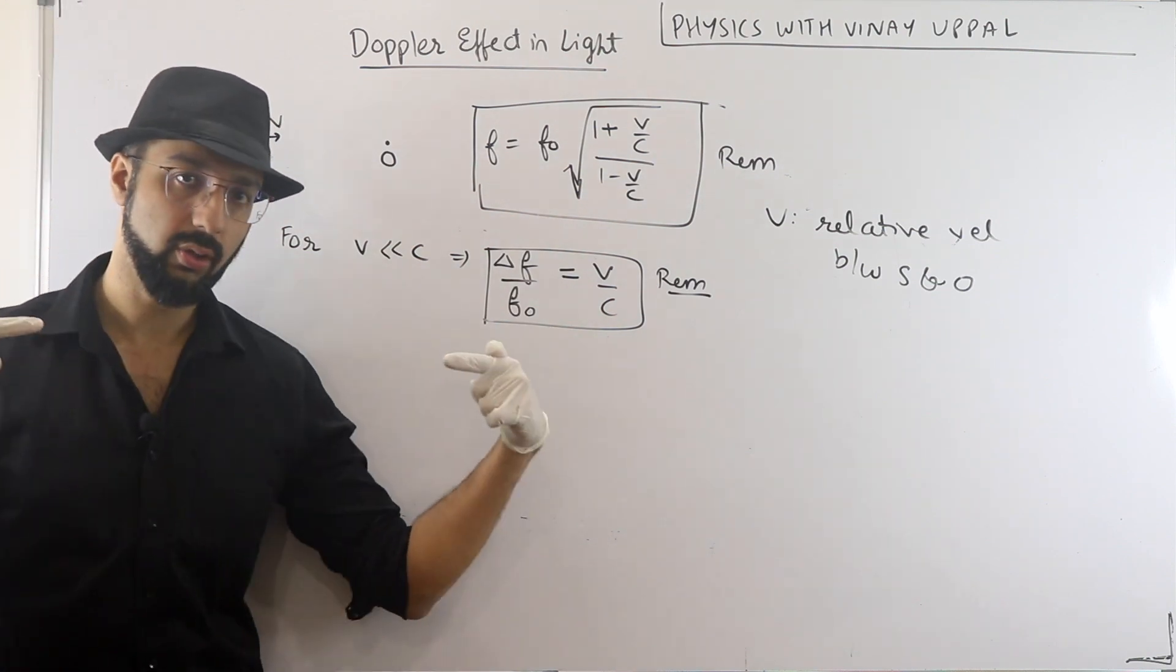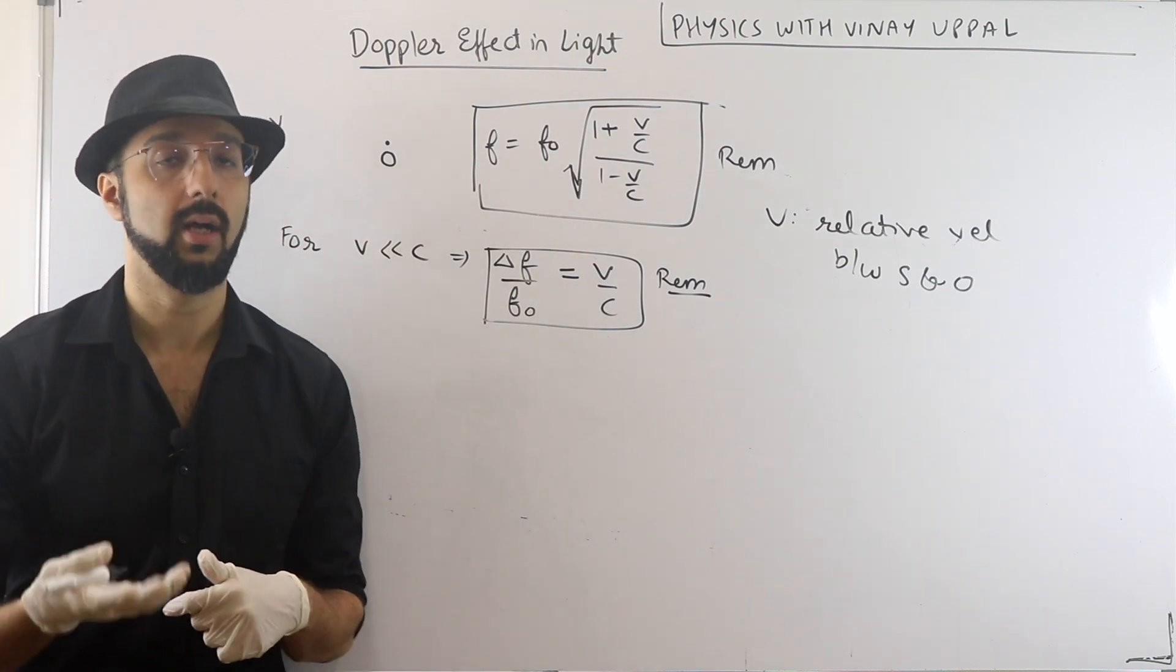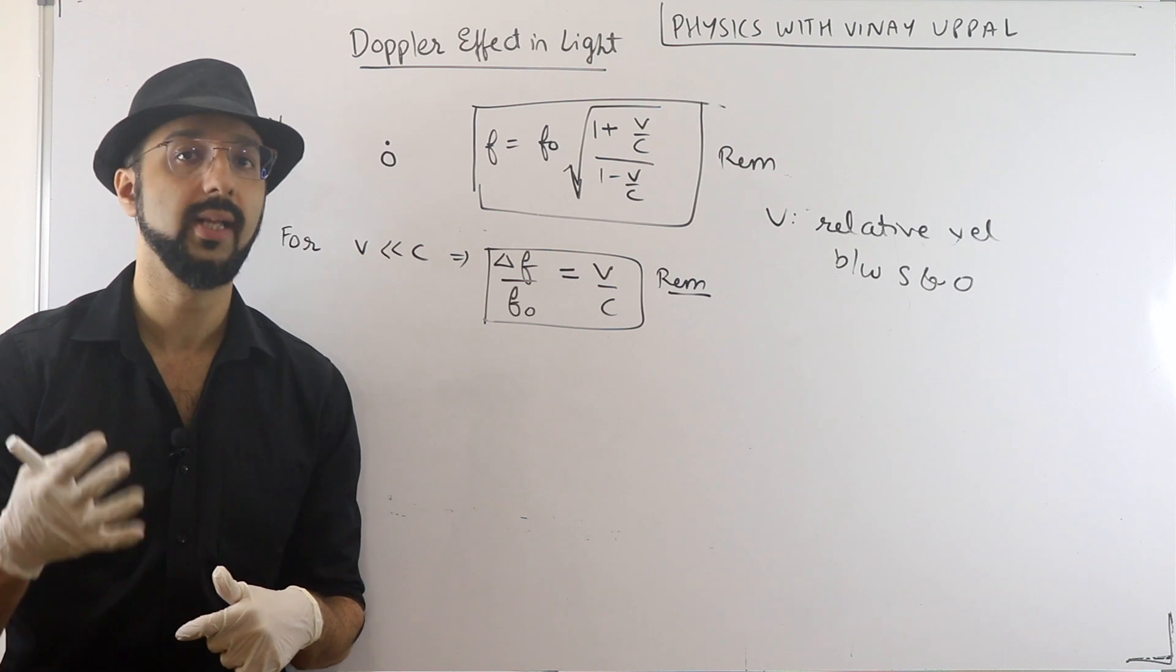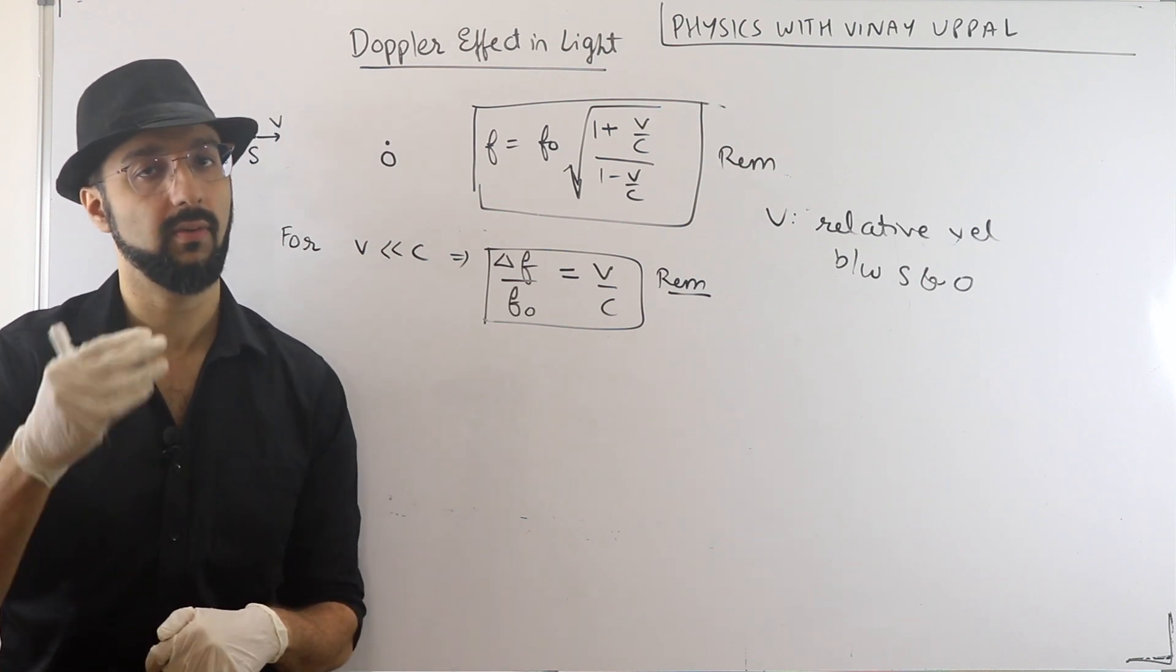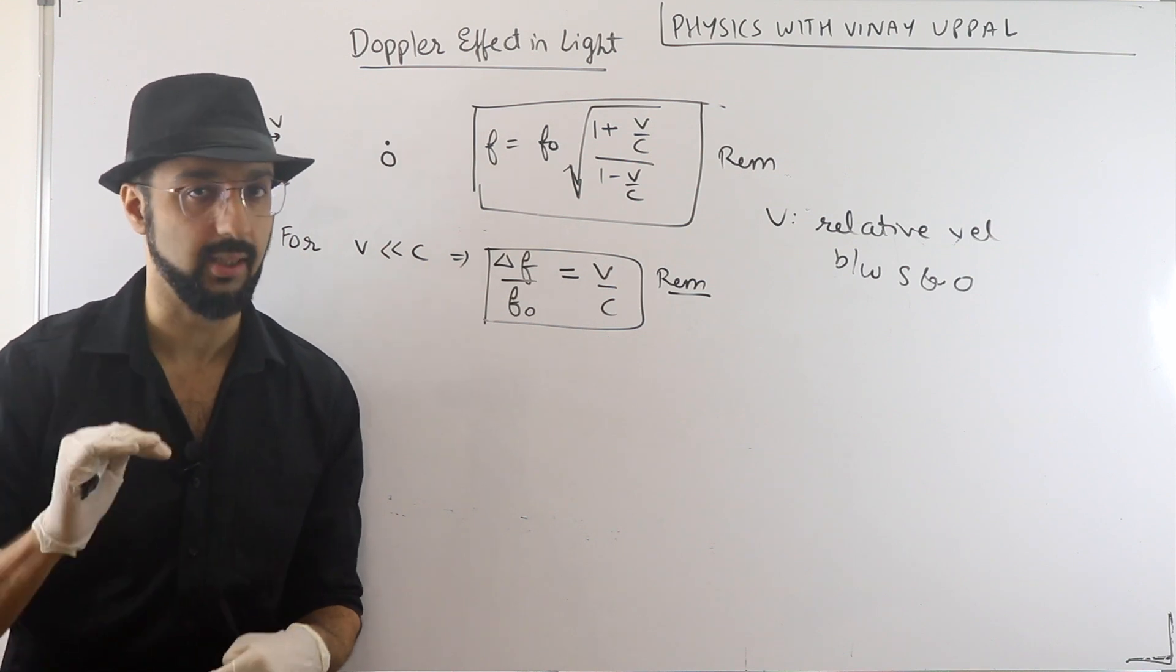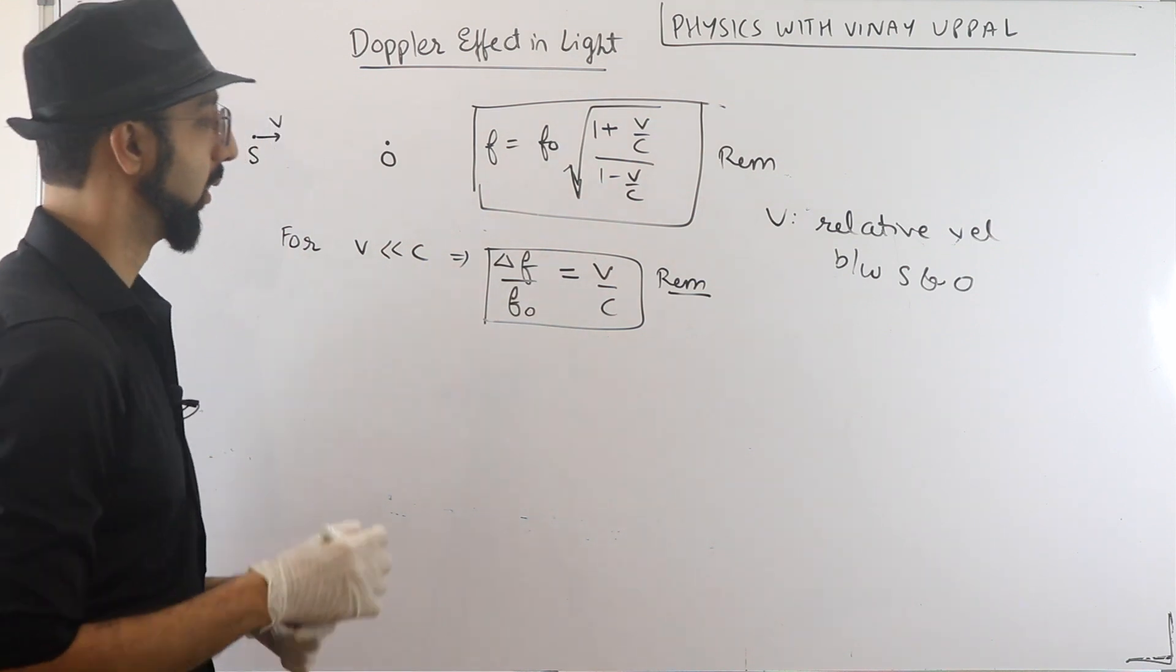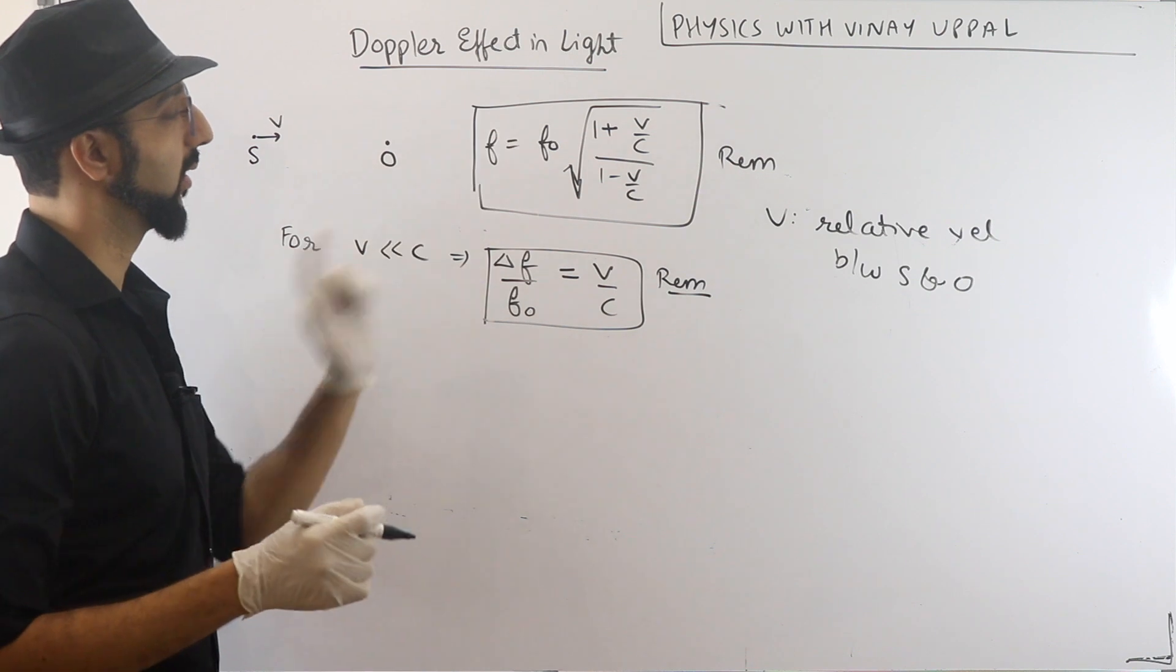If the source and observer are approaching, the frequency will be observed that will be more than the original frequency of the source. If they are going away, the frequency observed will be lesser. Just like sound waves. So these two formulas can come to the base question. Let's take a look.